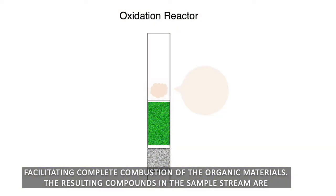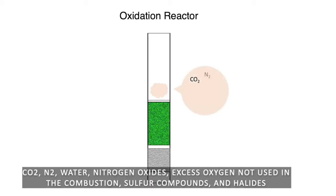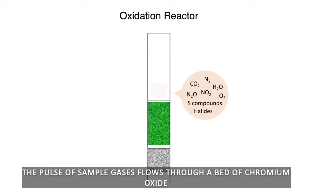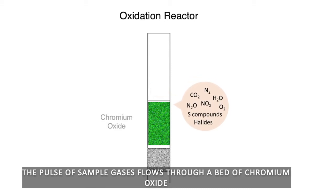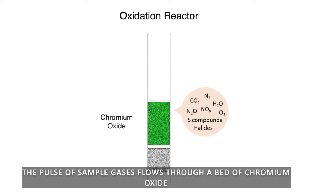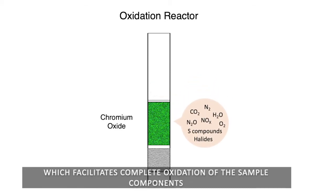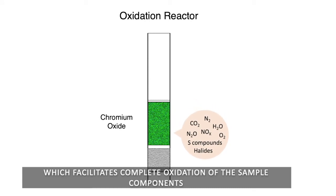The resulting compounds in the sample stream are carbon dioxide, dinitrogen, water, nitrogen oxides, excess oxygen that is not used in the combustion, sulfur compounds, and halides. The pulse of sample gases flows through a bed of chromium oxide, which facilitates complete oxidation of the sample components.